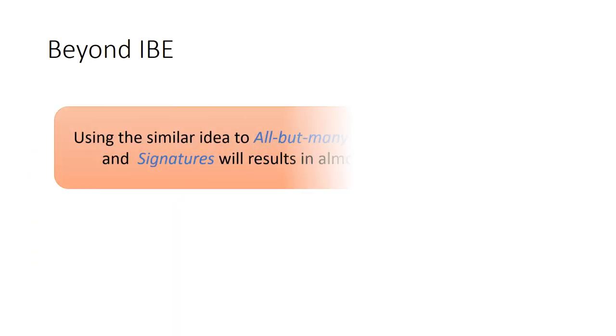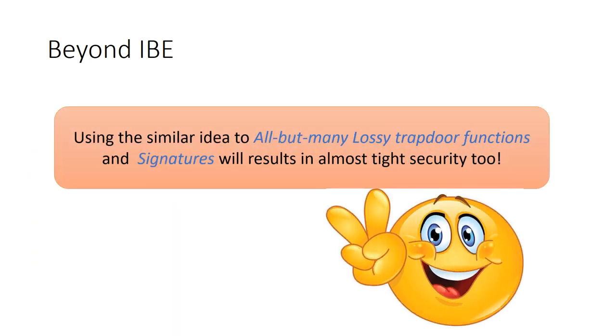Then, beyond IBE, using the similar idea for all-but-many lossy trapdoor functions and signature will result in almost-tight security too. Thank you.